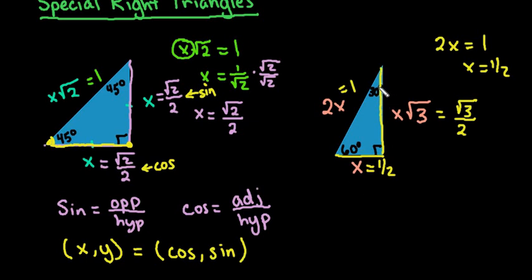If it were drawn differently so that the 30 was on the bottom here, then your coordinates would just switch. But for the 30-60-90 triangles, this will always be the 1/2 and this will always be the √3/2. And again, it's going to follow the same relationship.